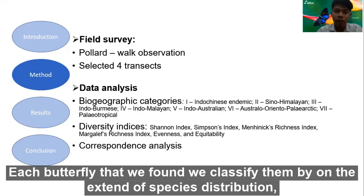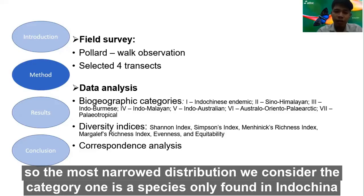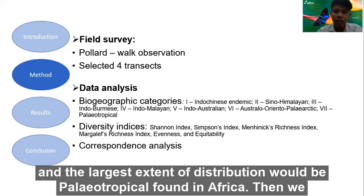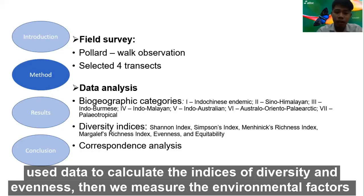For each species we found, we classified them based on the extent of species distribution. The most narrow distribution — the endemic category — includes species only found in Indochina, while the largest extent of distribution would be Palearctic or tropical into South Africa. We then used the data to calculate indices of diversity and evenness.